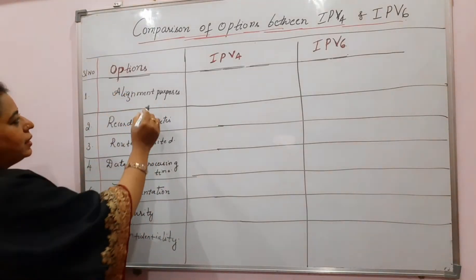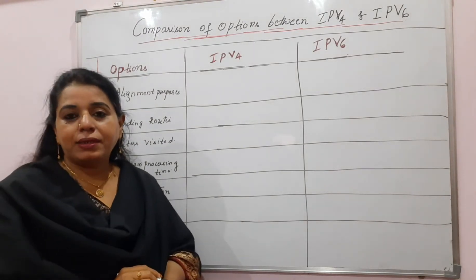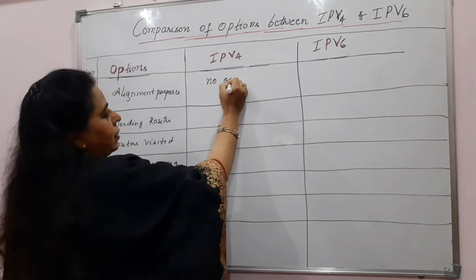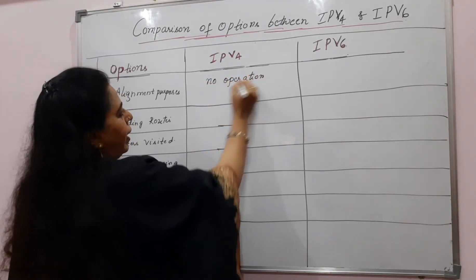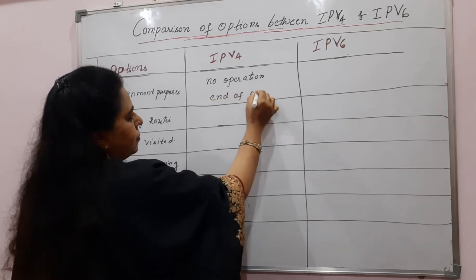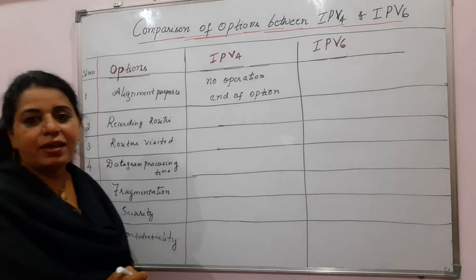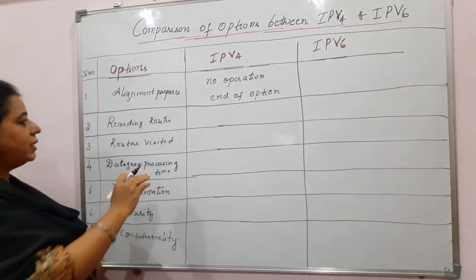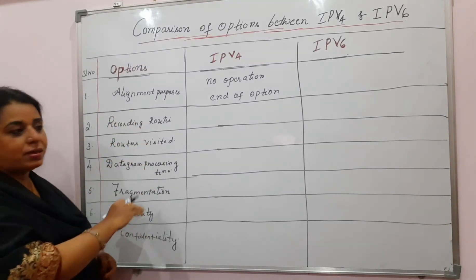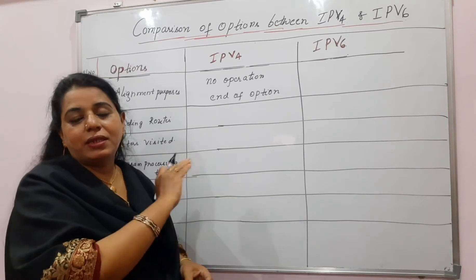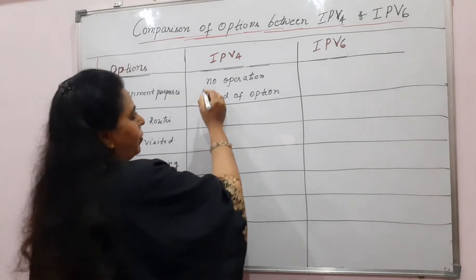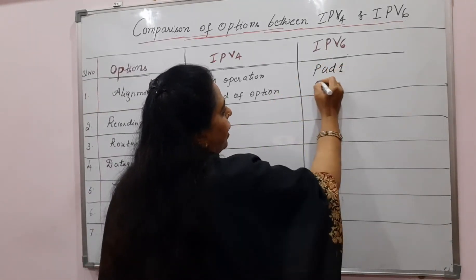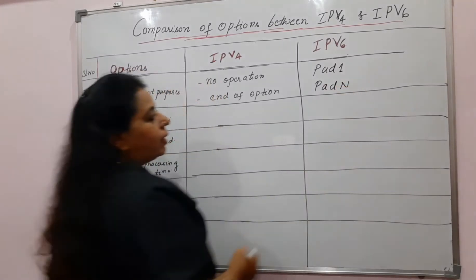For alignment purposes, in IPv4 you had two options: one is No Operation and the other is End of Option. In IPv6, for alignment purposes, you have Pad1 and PadN. These are the names of the options meant for alignment.